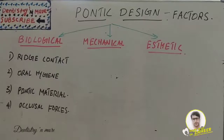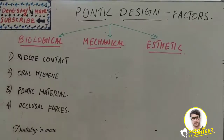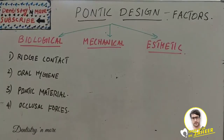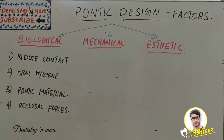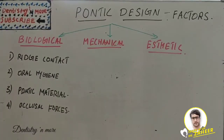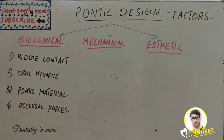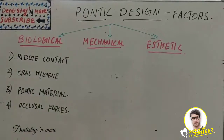Hello everyone, welcome back to another session in dentistry. Today's session is about the factors involved in designing a pontic. Last session we completed the pontic designs — the various designs used in fixed partial denture: sanitary, ridge lap, conical, ovate, and pontic facings. This session covers the factors to be considered while designing a pontic. We have three major categories: biological, mechanical, and aesthetic.